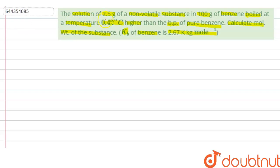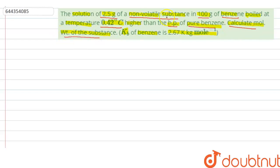So in this question, it is given that we have a solution of 2.5 grams of a non-volatile substance in 100 grams of benzene, and it is boiled at a temperature 0.42 degree Celsius higher than the boiling point of pure benzene. We have to calculate the molecular weight of the non-volatile substance. Here Kb, the molar elevation constant of benzene, is given as 2.67 Kelvin·kg per mole.